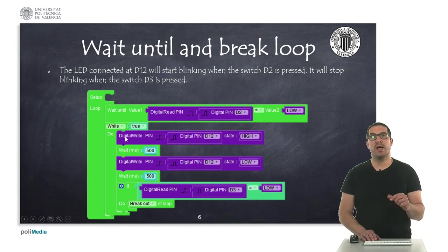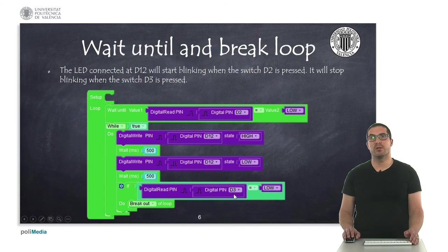And, in this, this will stop blinking whenever we push the other button, the button connected to pin D3, okay? So, when this condition is true, then we will break the loop, this particular loop, the while loop.